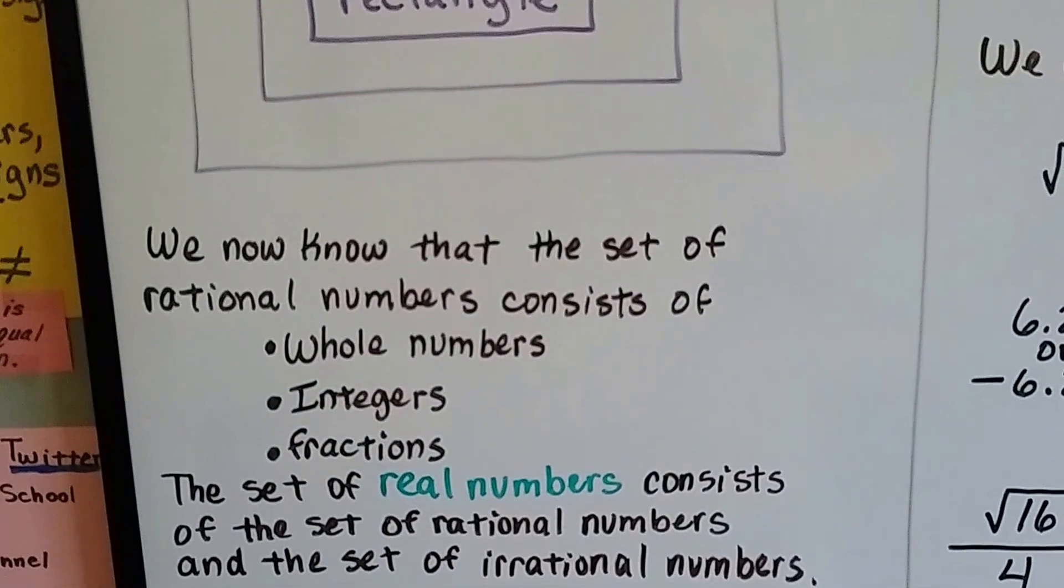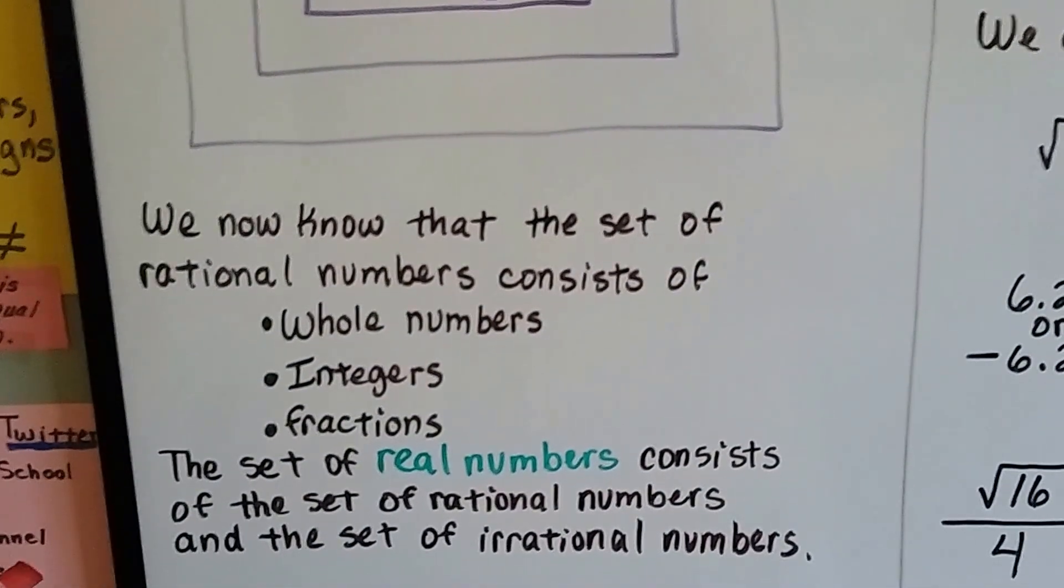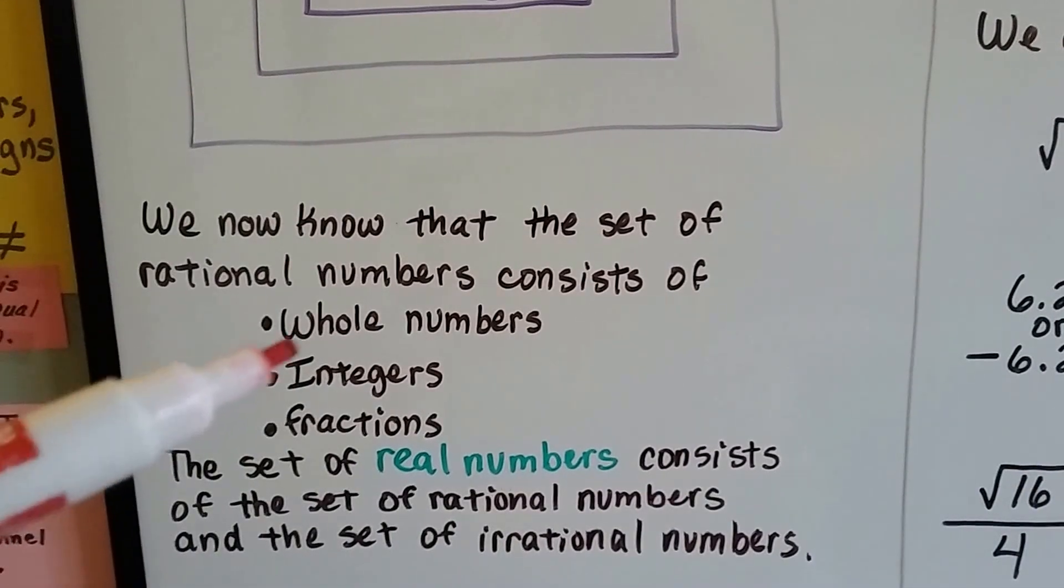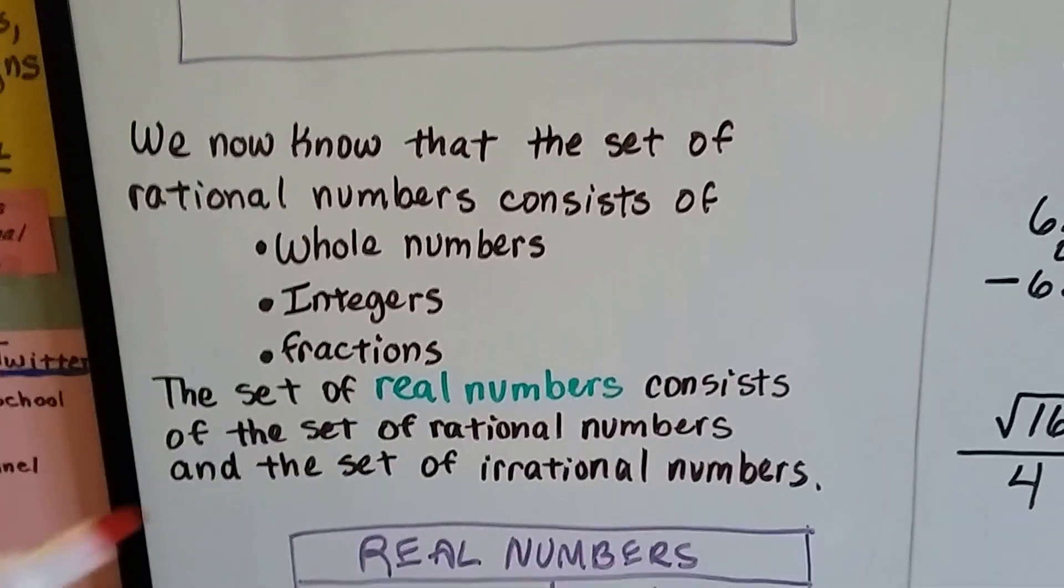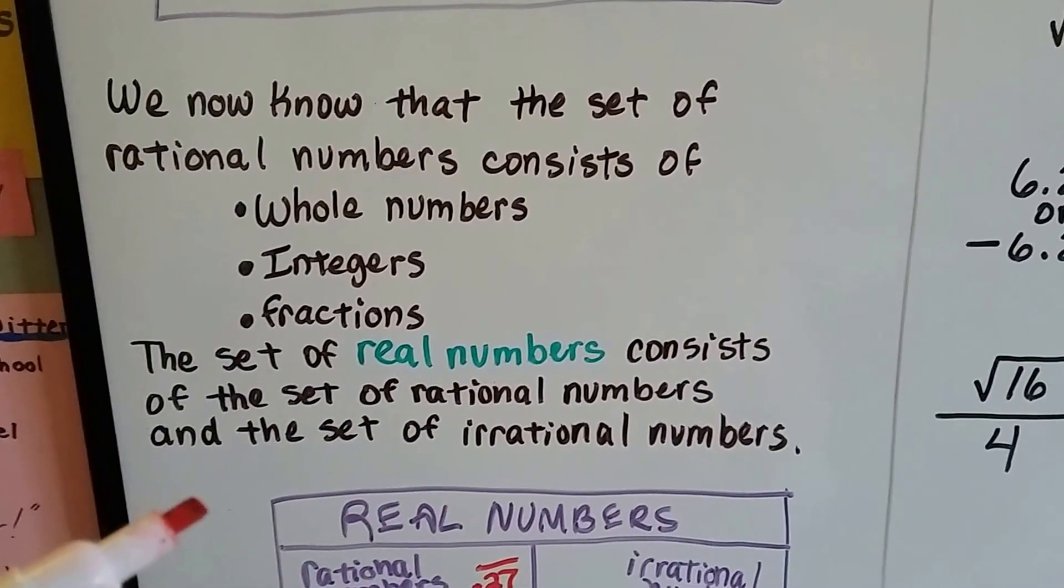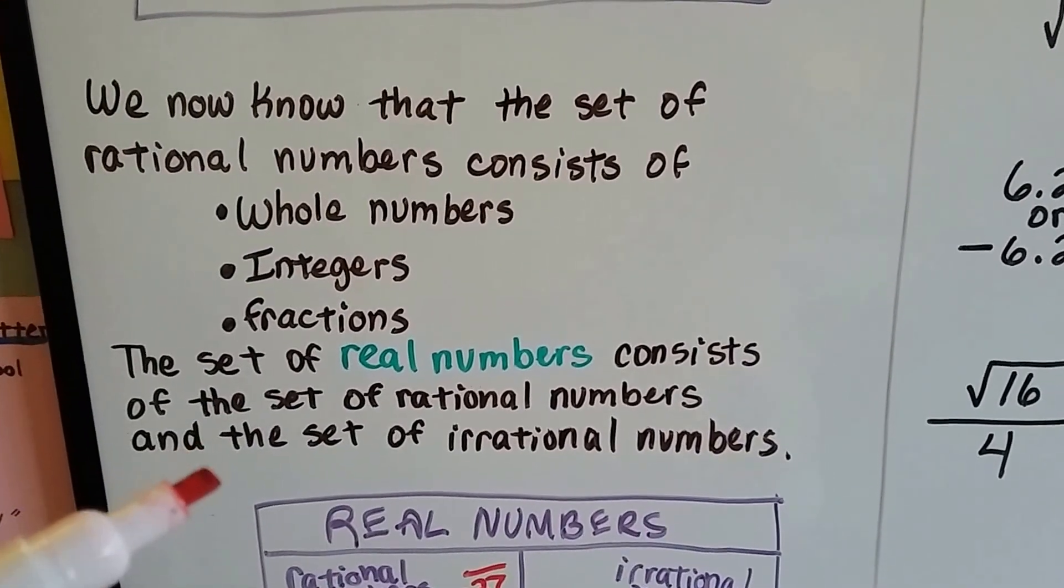We know that we can get the set of rational numbers and they consist of whole numbers, integers, and fractions. The set of real numbers consists of the set of rational numbers and the set of irrational numbers.